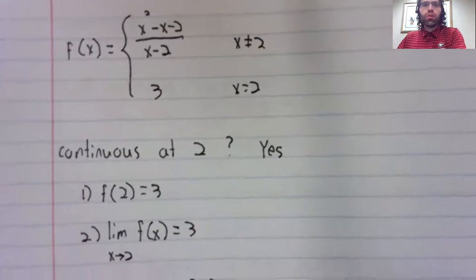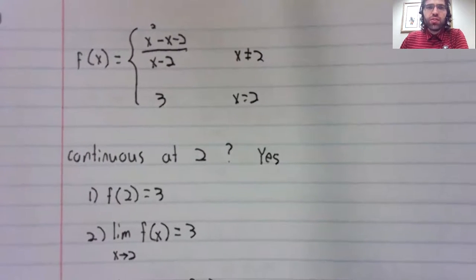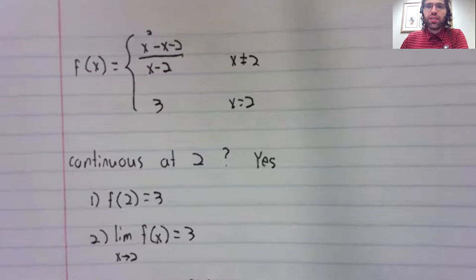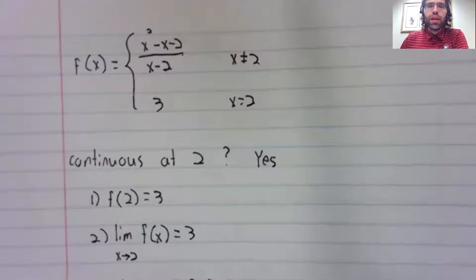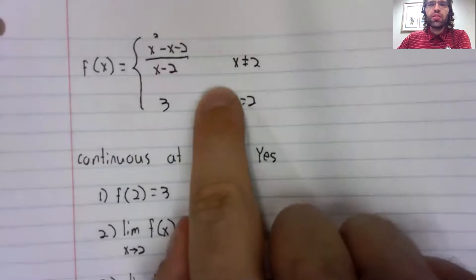Then I showed a third example where it was continuous at two. Notice that this function that is continuous